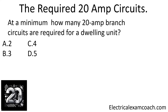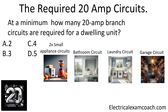At a minimum, how many 20 amp branch circuits are required for a dwelling unit? This is asking a very specific question. There is a code minimum of 20 amp branch circuits required in every dwelling unit. The correct answer is five. It's going to include our two small appliance circuits, our bathroom circuit, our laundry circuit, and our garage circuit. These are not to be confused with questions asking about general, lighting, or receptacle circuits. These are the code minimum of the required 20 amp branch circuits in a dwelling, and the answer is five.